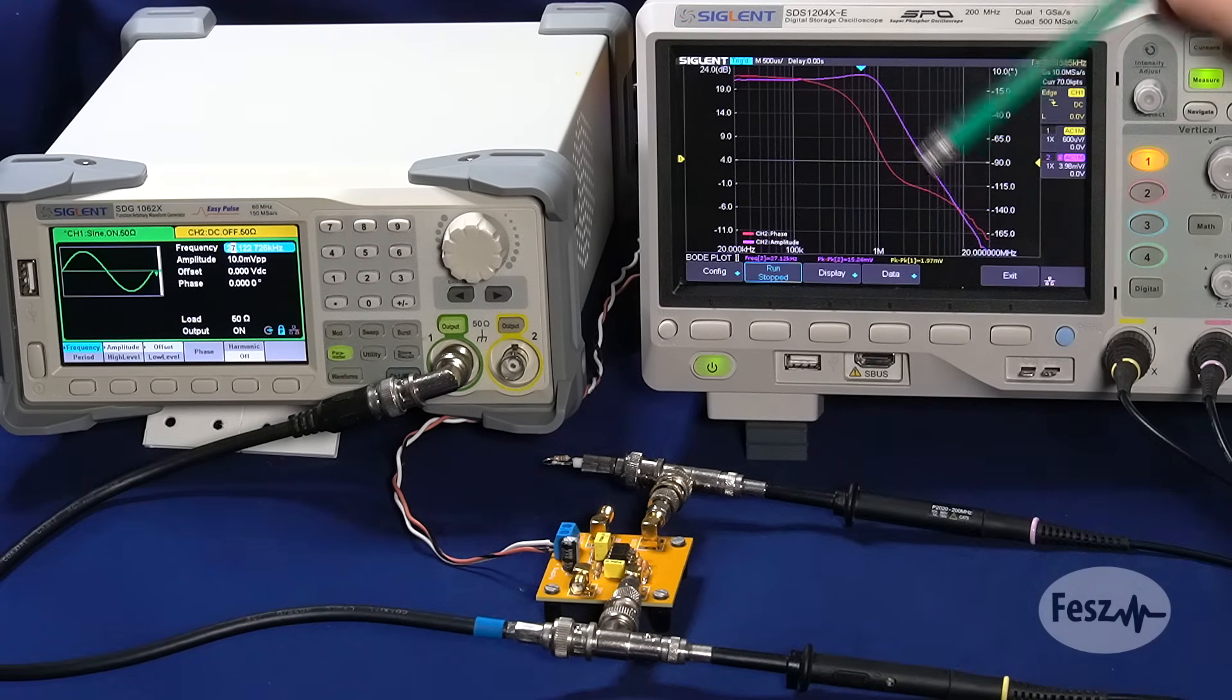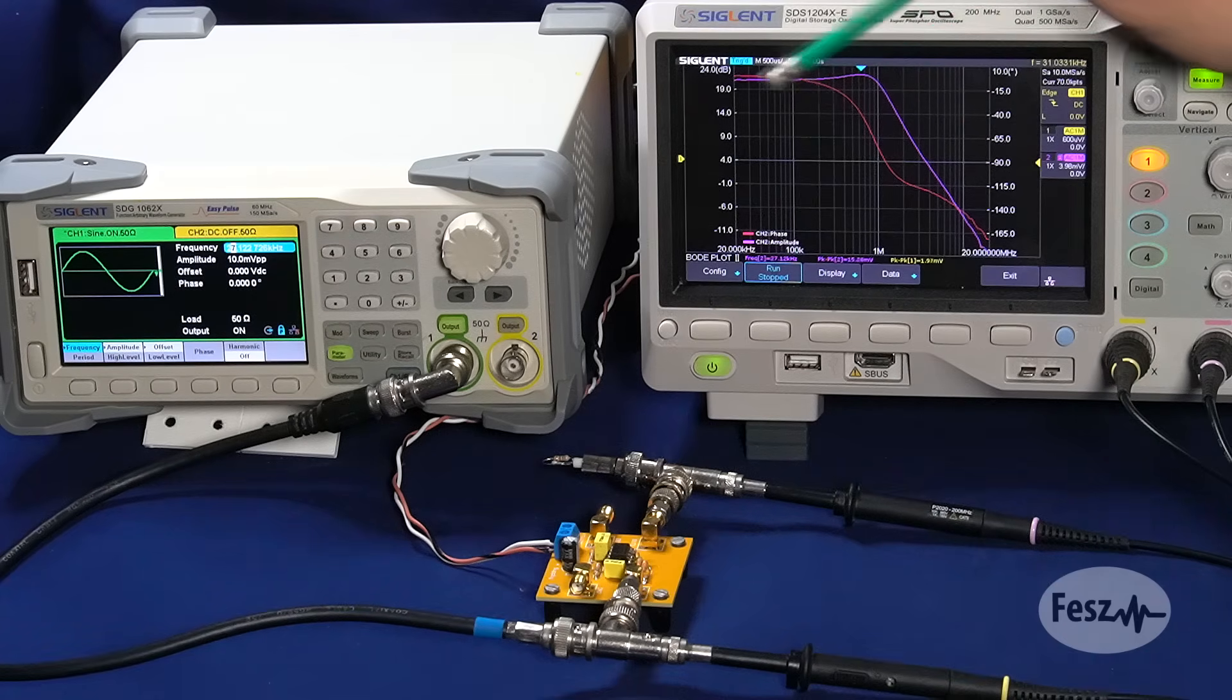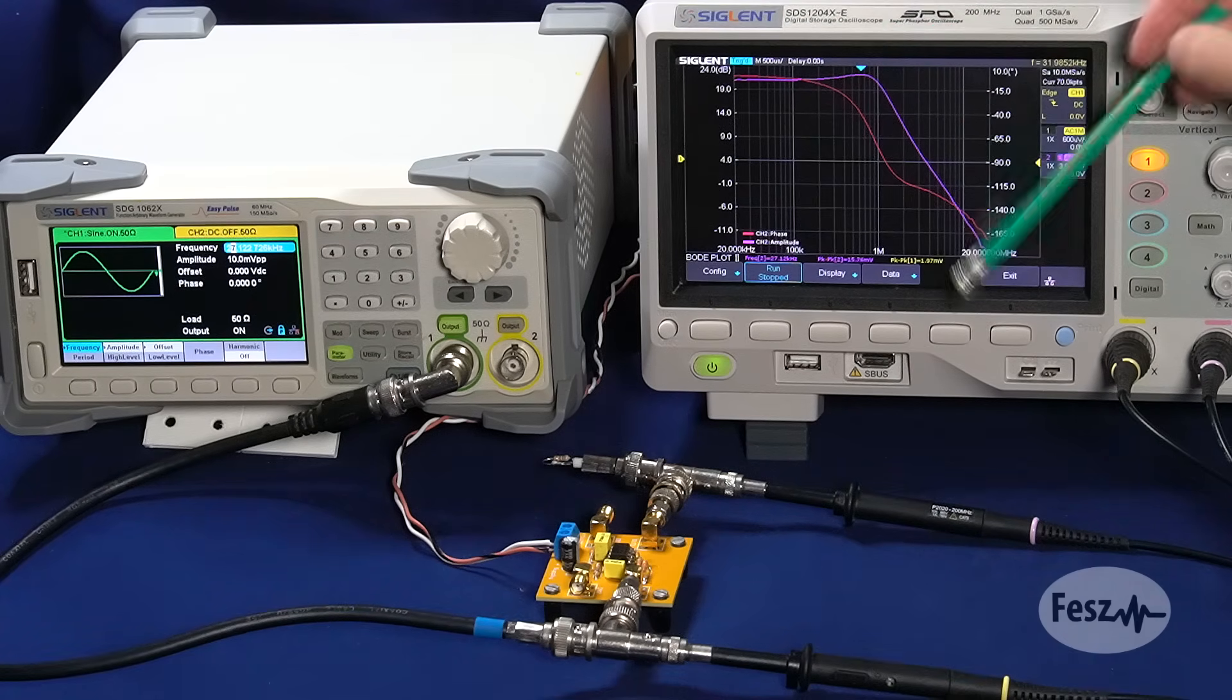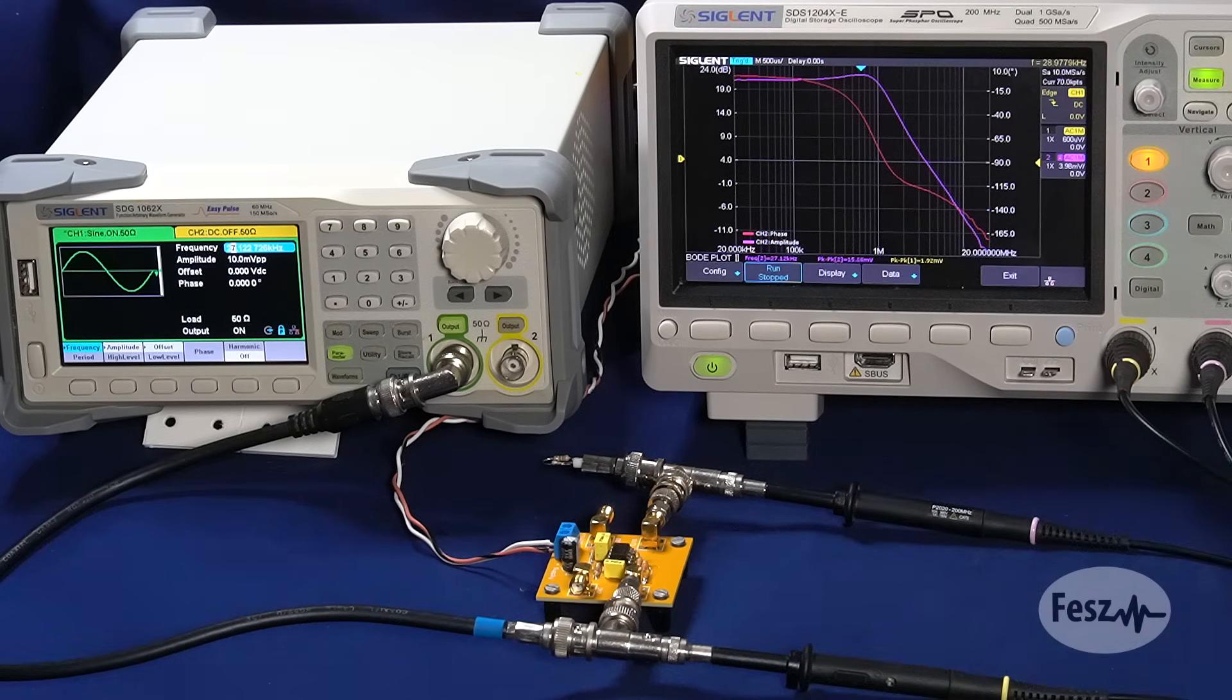So right before the gain bandwidth product limit, the results are a bit more unpredictable. But a bit lower than that, the op-amp can indeed amplify a signal reliably by the ratio set using the resistors.